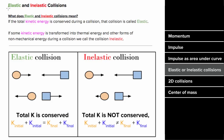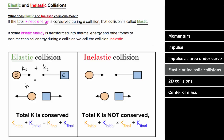What's the difference between an elastic and an inelastic collision? An elastic collision means the total kinetic energy of the system is conserved during the collision. If a sphere and a cube collide, the total kinetic energy of the sphere plus cube before the collision must equal the total kinetic energy of the sphere plus cube after the collision.